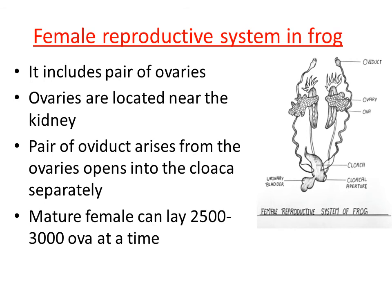To summarize the female reproductive system: it consists of a pair of ovaries located just near the kidney, with no functional connection to the kidney unlike the male reproductive system. A pair of oviducts arises from the ovaries and opens into the cloaca separately, so there is no urinogenital duct in the female reproductive system because the oviduct opens separately into the cloaca.